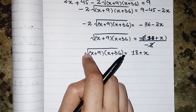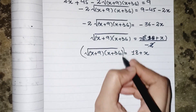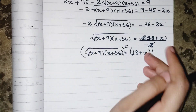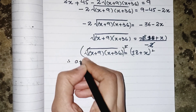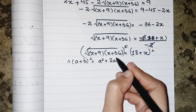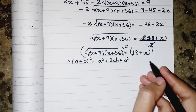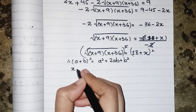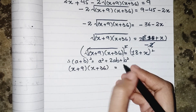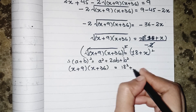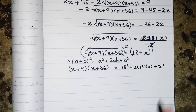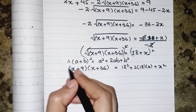Again we have to remove this root, so we apply squaring on both sides. The square and root cancel out. On the right side we have the formula (a plus b) whole square, which equals a squared plus 2ab plus b squared. So (x plus 9) multiplied by (x plus 36) equals 18 squared plus 2 times 18 times x plus x squared.